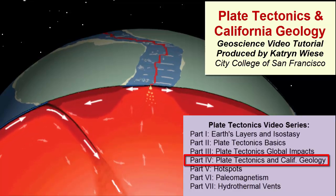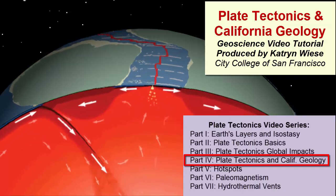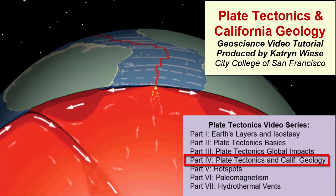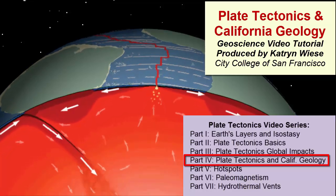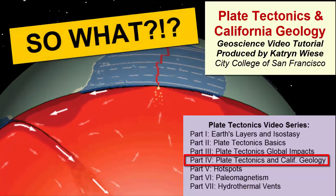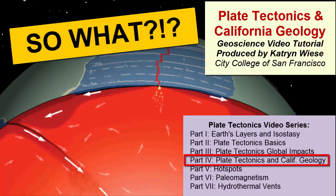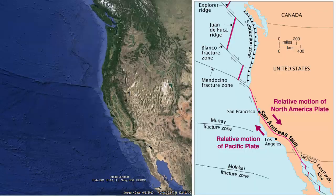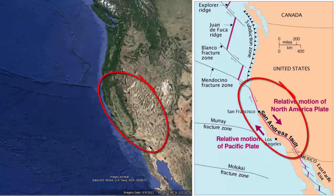So now that we have the basics down for plate tectonics — what it is, how it works, and how we know about it — so what? How does plate tectonics affect life in California, or anywhere else for that matter? To answer that, let's look at California's current plate tectonic setting.